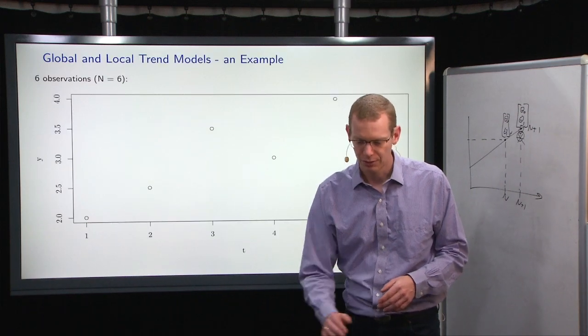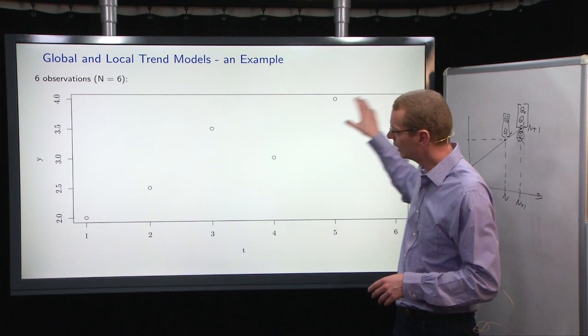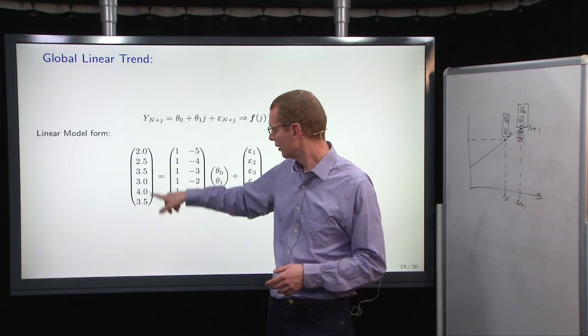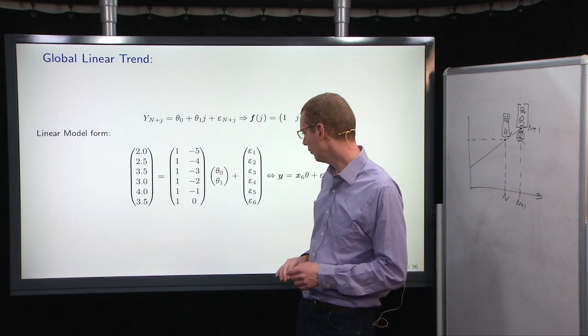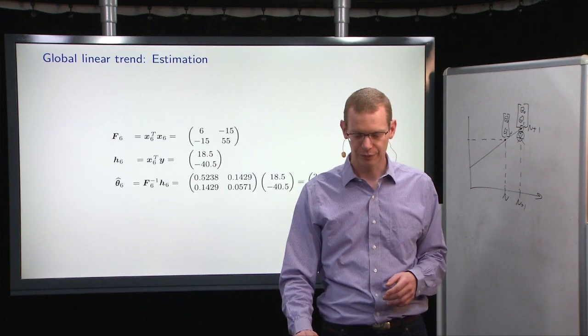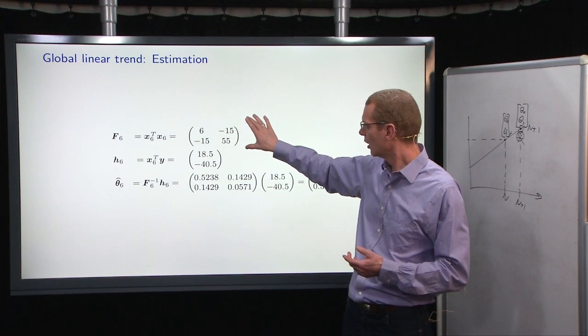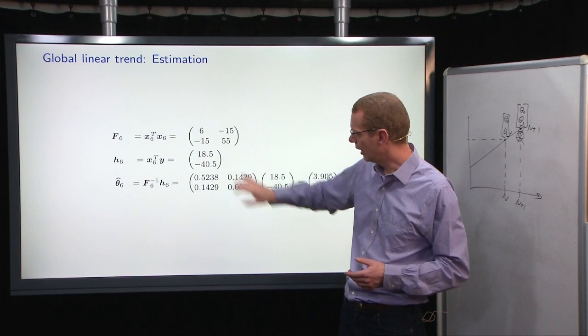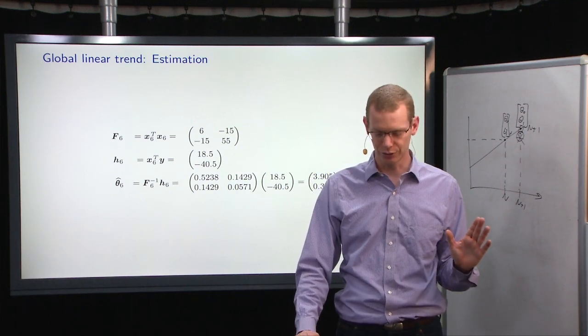So what we did, going back to the same example as for the global model, we have six observations here. What we want to do, we want to look at some observations. We have the design matrix here. We have some parameters that we want to estimate. And we're using the linear model.